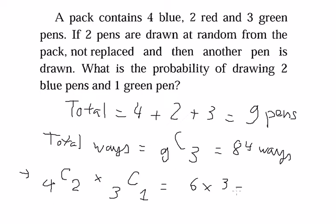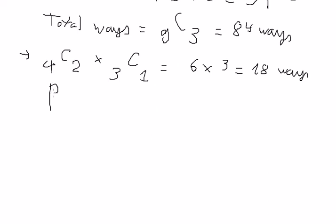3, you got about 18 ways to select about 2 blue pens and 1 green pen. So the probability to select about this one, that should be about 18 divided by 84, and you will get about...